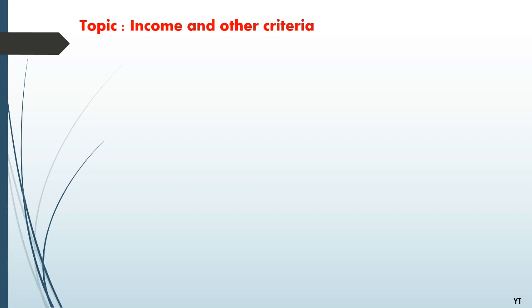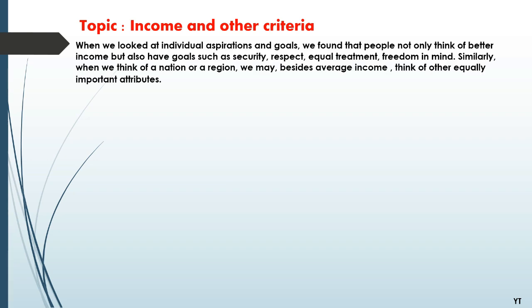In our previous video we discussed in detail about individual aspirations and goals. We found that people not only think of better income but also have goals such as security, respect, equal treatment, and freedom of mind. Similarly, when we think of a nation or a region, we may, besides average income, think of other equally important attributes.